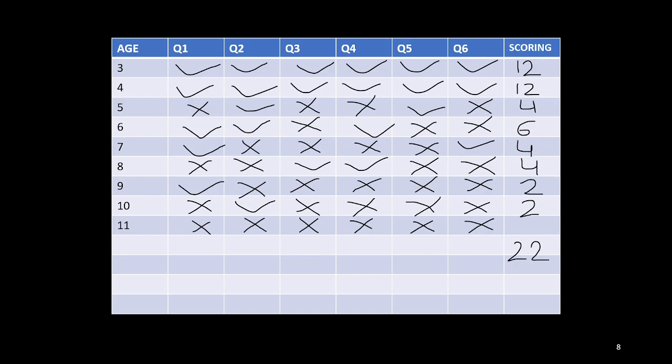Here is an example of a 5 years old boy. At age level 3, all items are passed, so credit of 2 months is given for each item passed. At age level 4, all items are passed, so 12 months awarded. Age level 4 is the basal age.